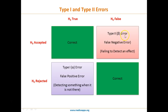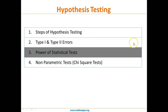Conversely, Type 2 error or beta error is the false negative error, which means failing to detect an effect. So if you have done a pregnancy test and got a negative result but the person is actually pregnant, that kind of error is called beta error.